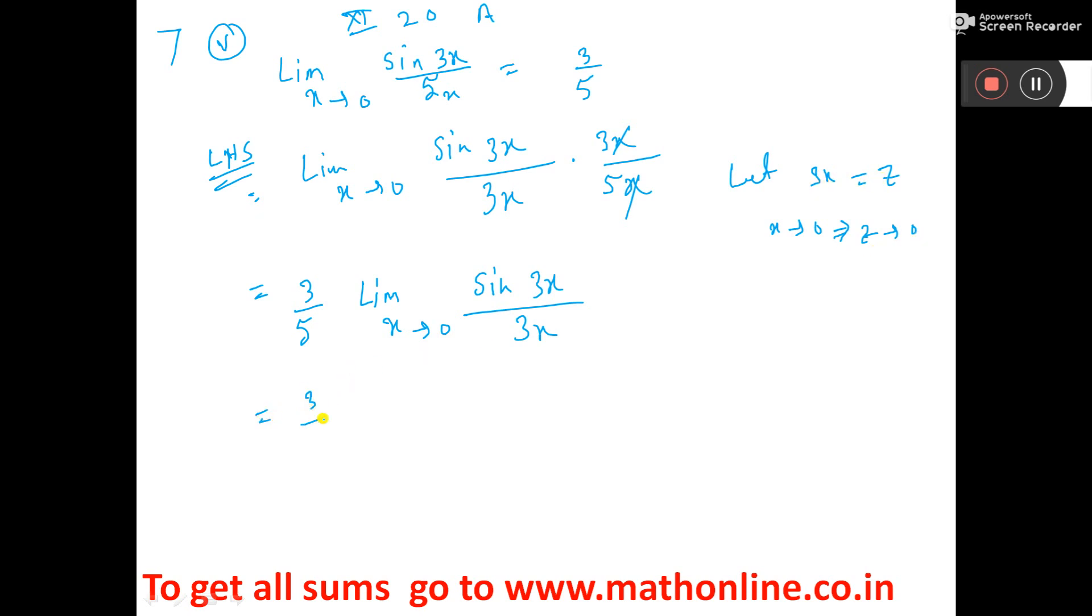So here you write 3 by 5. Limit z tends to 0 sin z by z. This is the formula which equals 1. So 3 by 5 into 1. That is equal to 3 by 5.